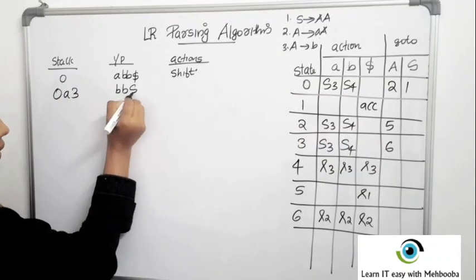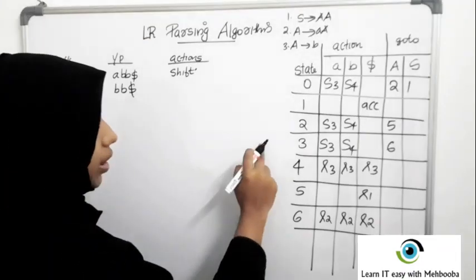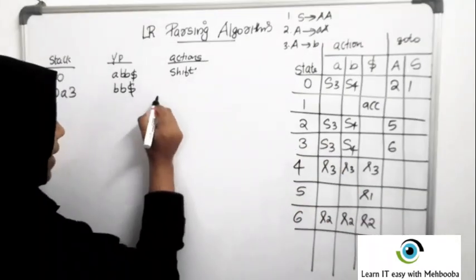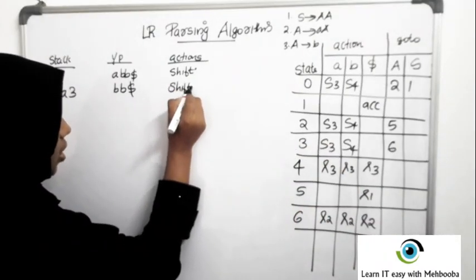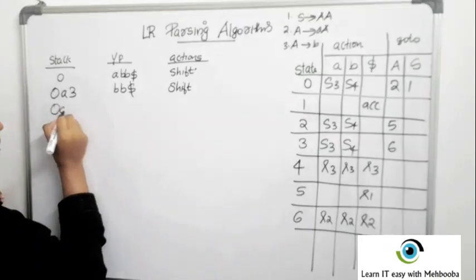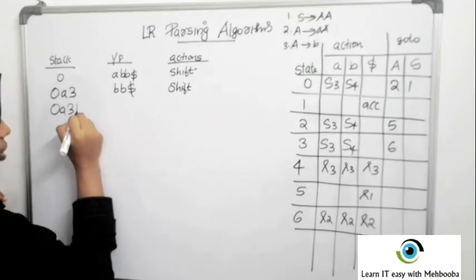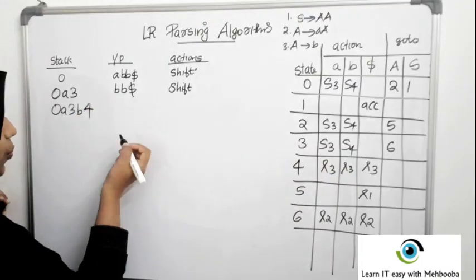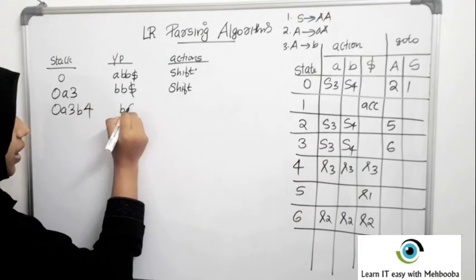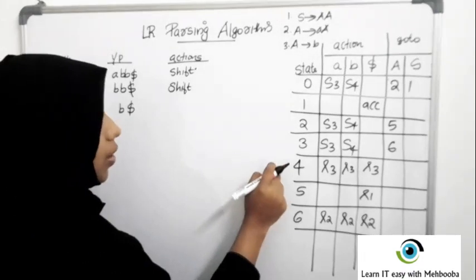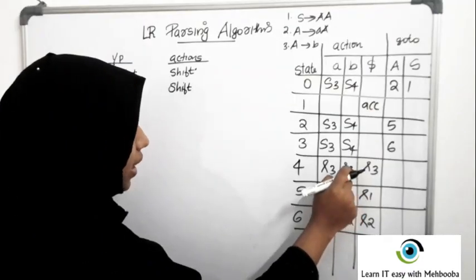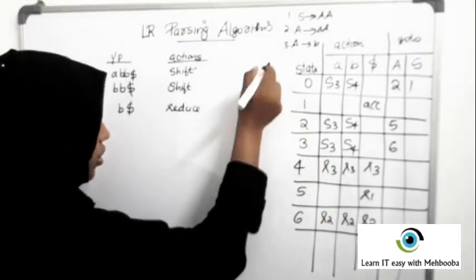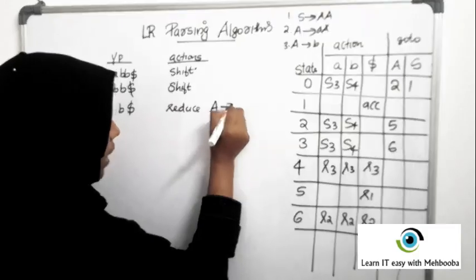Now the remaining input is BB$. Check row 3 and column B — the cell contains S4, so shift B and push state 4 onto the stack. The remaining input is now B$. Check 4B — it is R3. R stands for reduce and 3 is the production number, so reduce by production 3: A gives B.